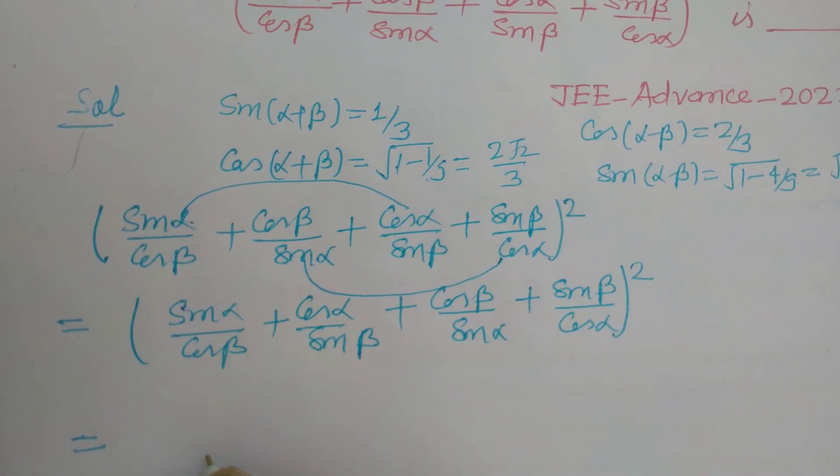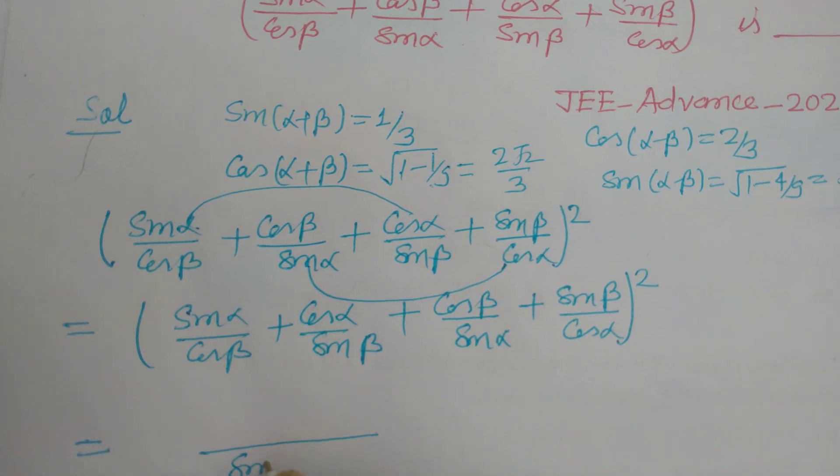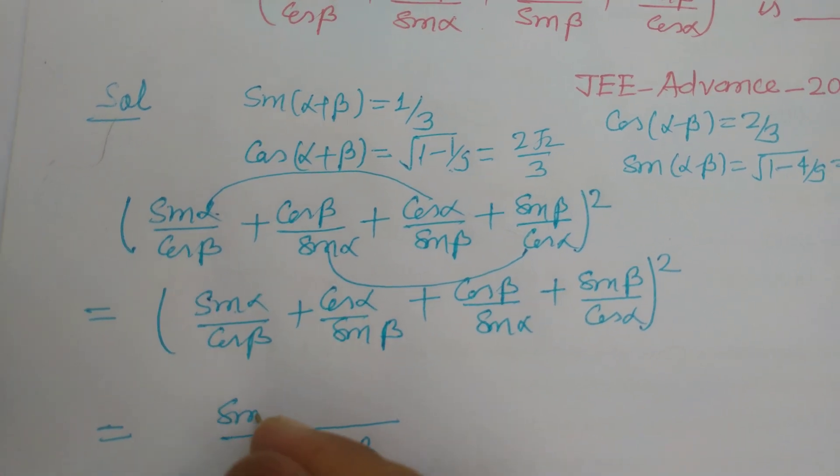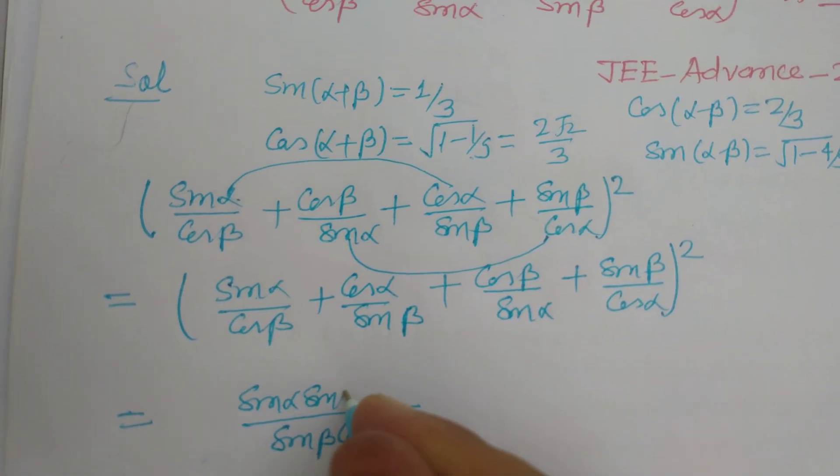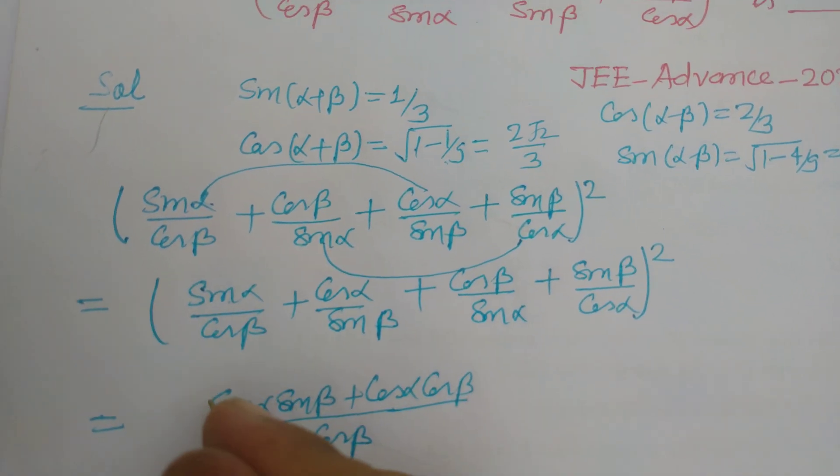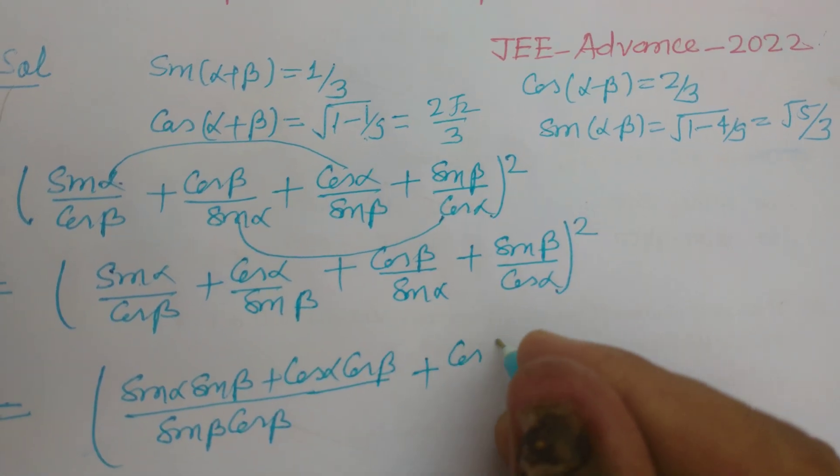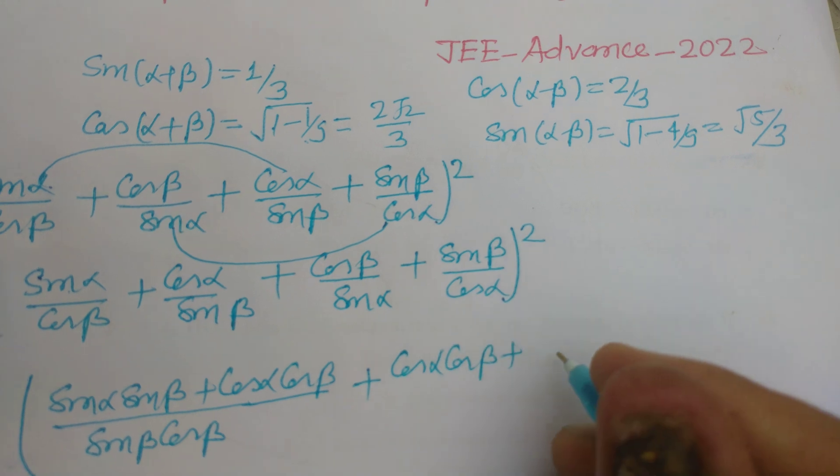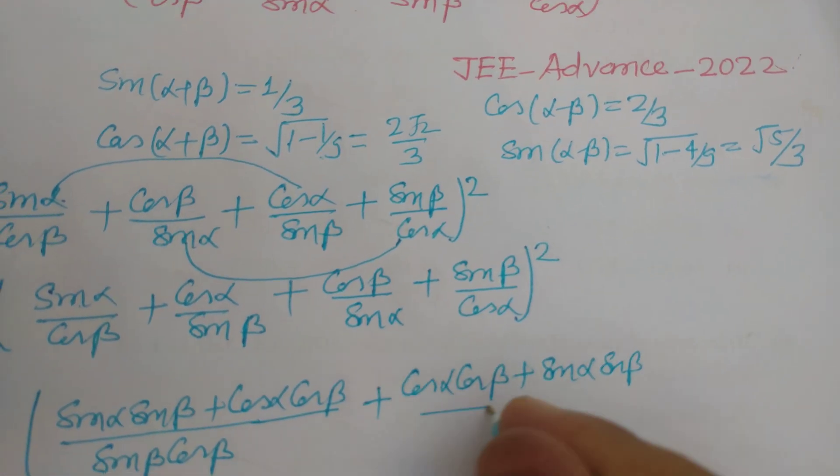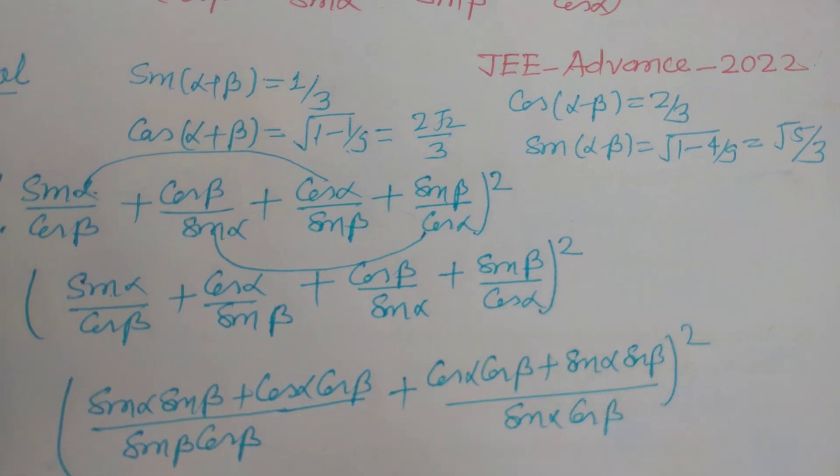Now take LCM here with these two terms: sin β cos β here, sin α sin β + cos α cos β, plus here cos α cos β + sin α sin β over sin α cos β whole squared.